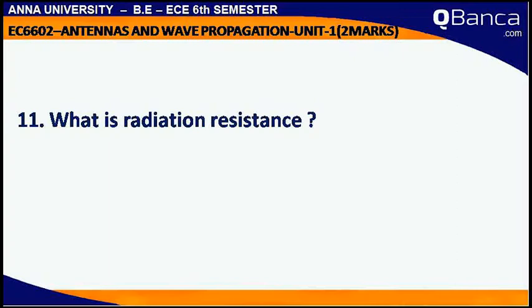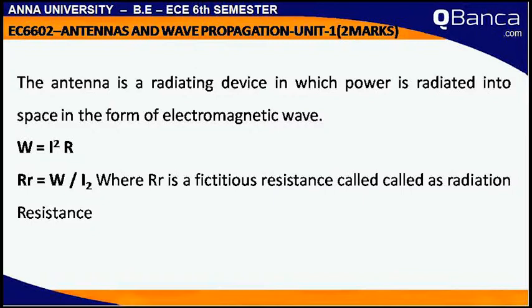What is the radiation resistance? The antenna is a radiating device in which power is radiated into space in the form of electromagnetic waves. W is equal to I squared R. Rr is equal to W divided by I squared, where Rr is the radiation resistance.